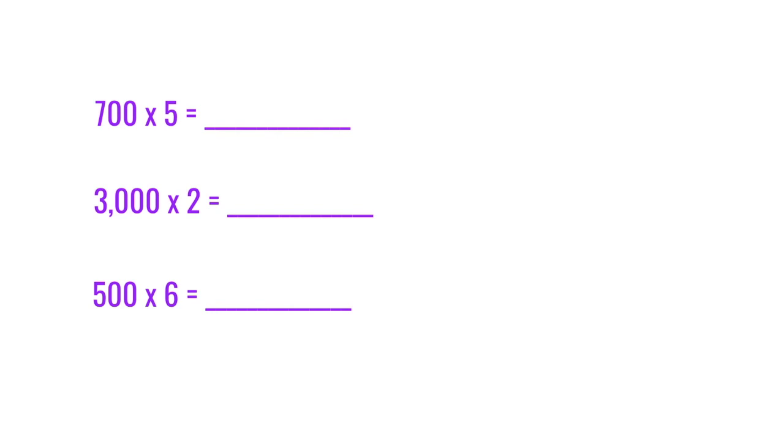Now let's try some practice problems. We have 700 times 5. The basic fact would be 7 times 5, which is 35. And then we add 2 zeros from 700 to give us 3,500.